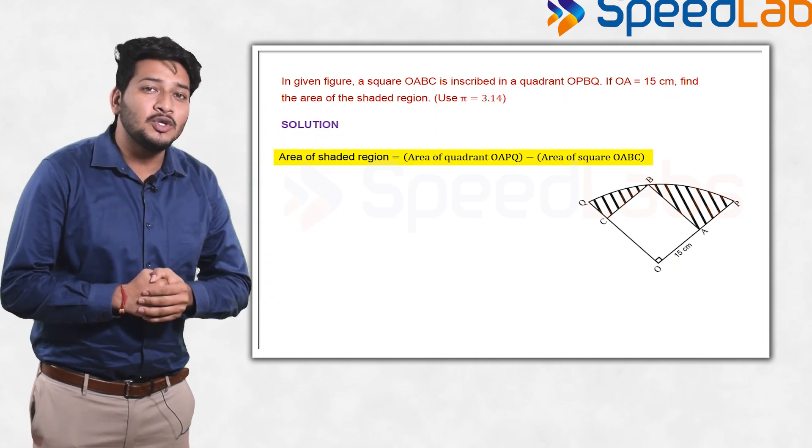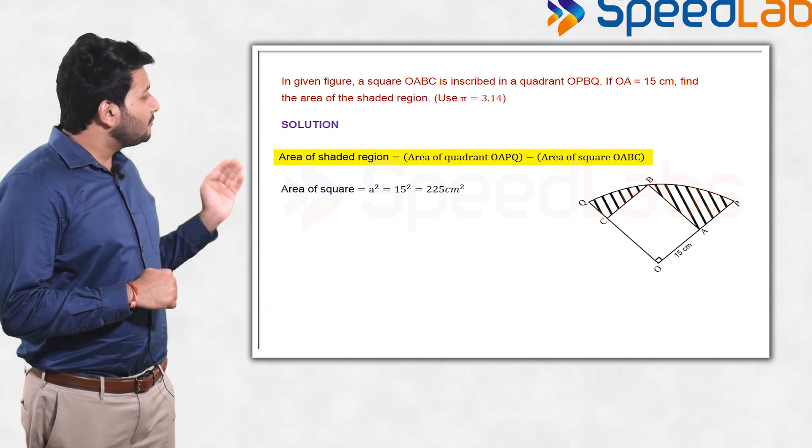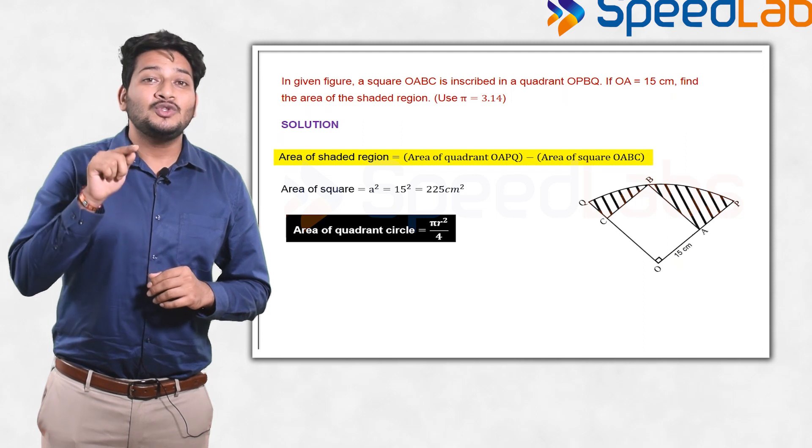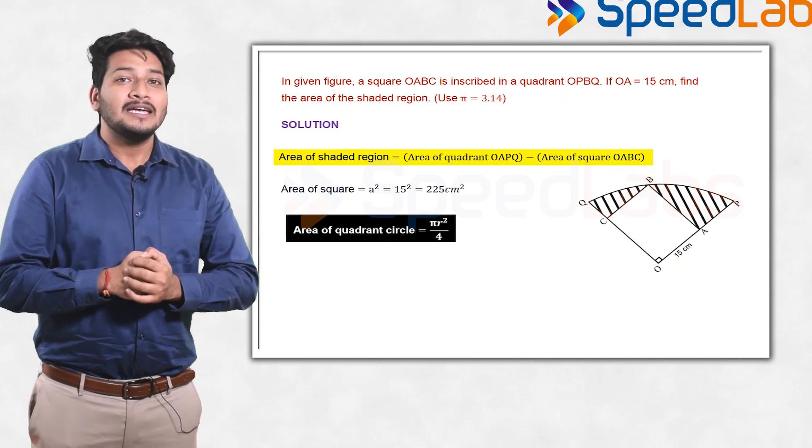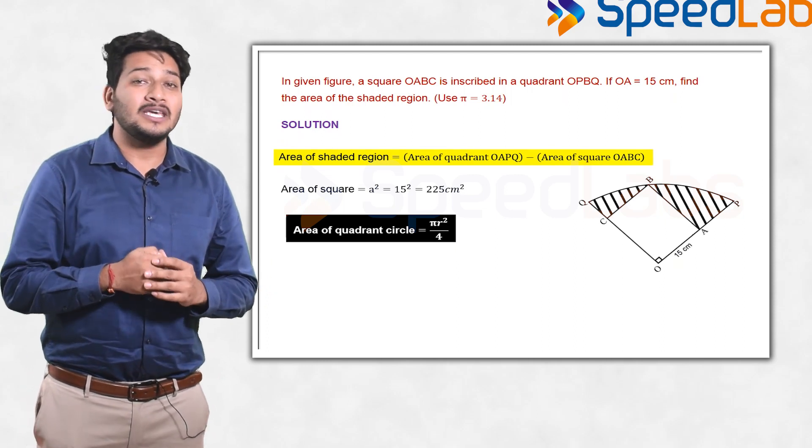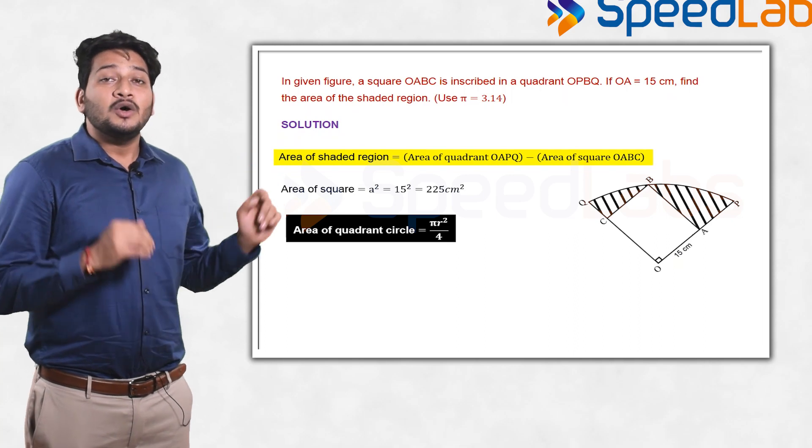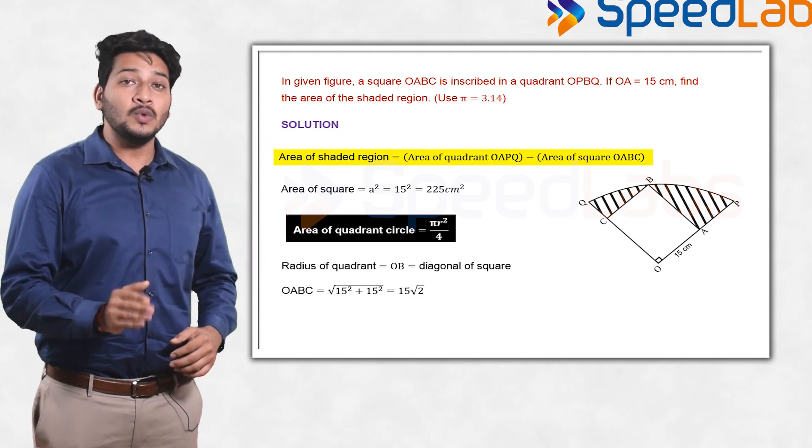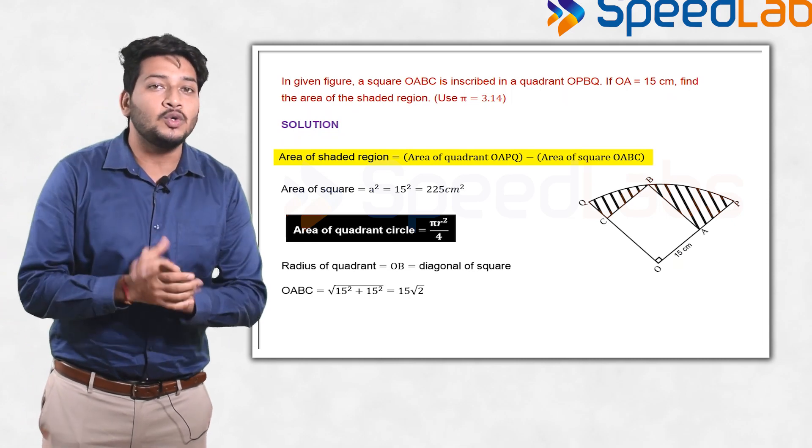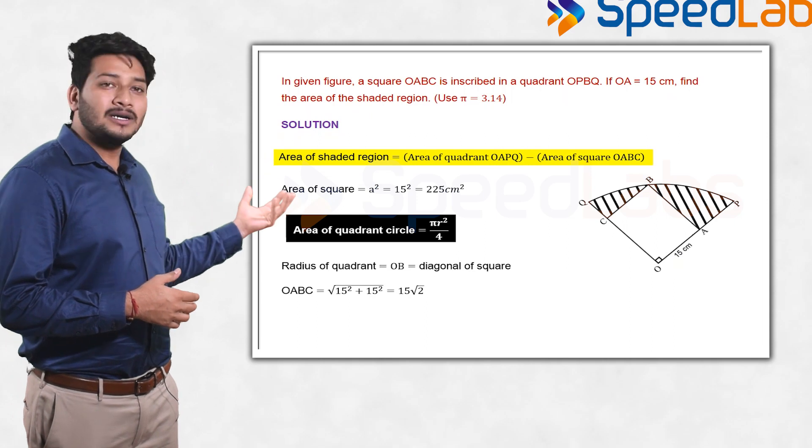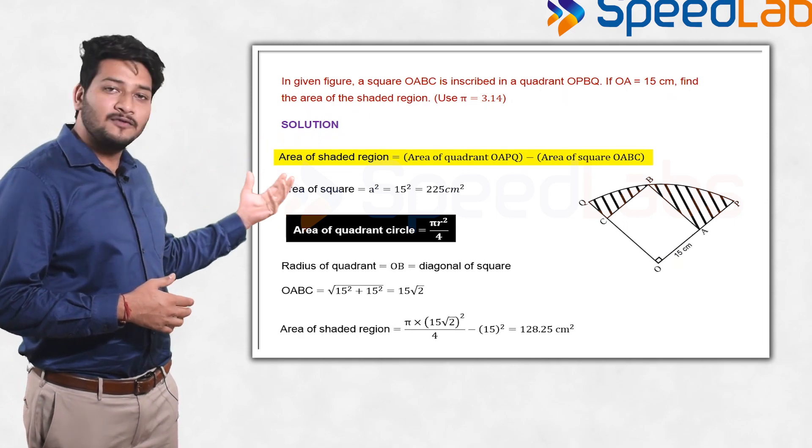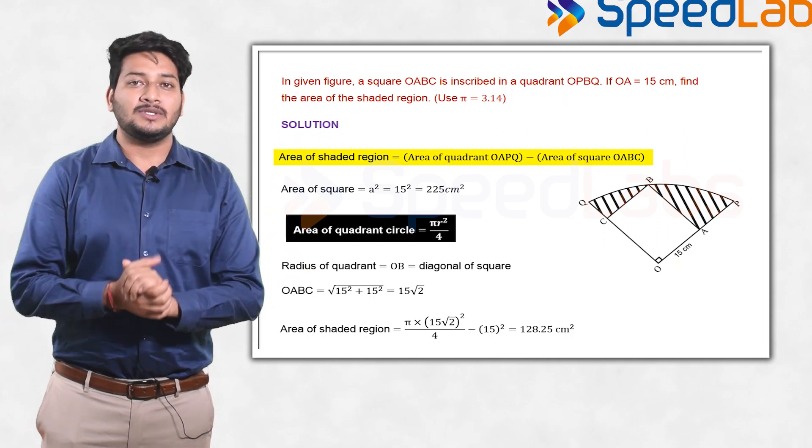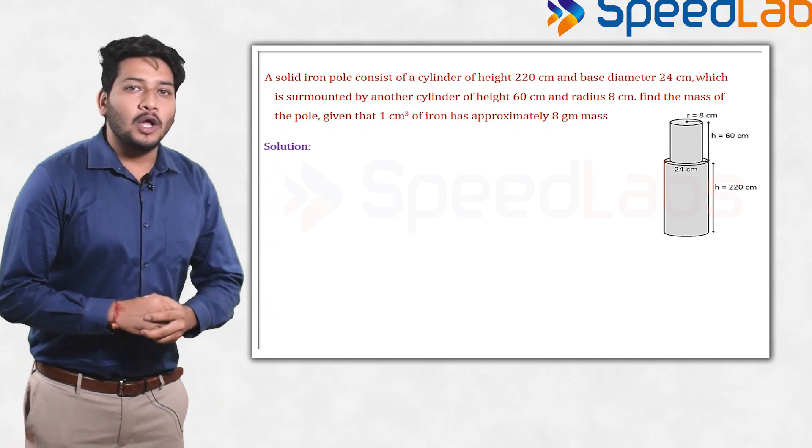Now area of quarter circle is πr²/4, but the radius is not given to you. What is given? The diagonal. What is the diagonal of a square? It is √2 times the side of square. So side is 15. If you find out the area of quarter circle which is π into r² upon 4, where r is 15√2, and subtract the area of square from the area of quarter circle, you will get the area of the shaded region.